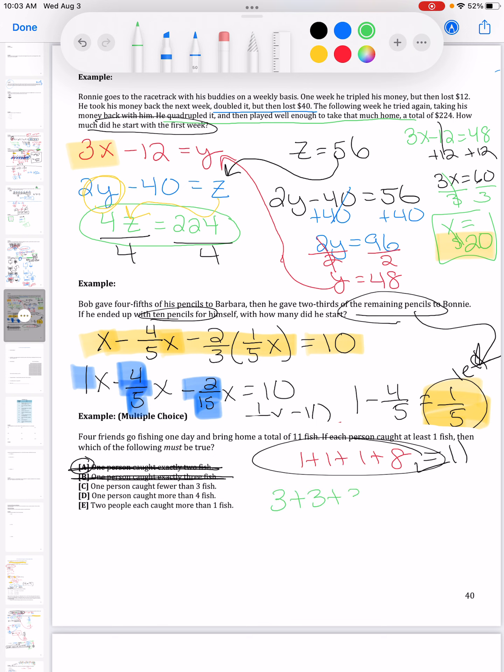Well I want to prove that wrong. I want to prove that they all had three fish. So let me see what happens when I do all three fish. That gives me twelve. I needed eleven. The only way is to make it less, so somebody had to catch less than three fish.